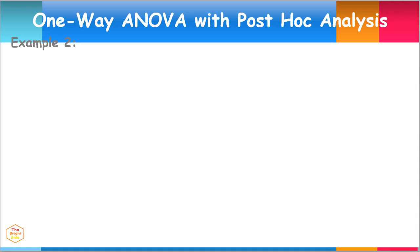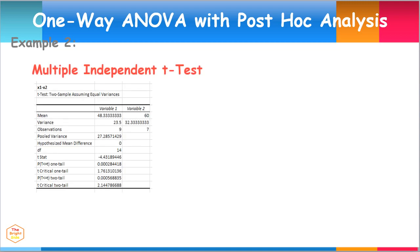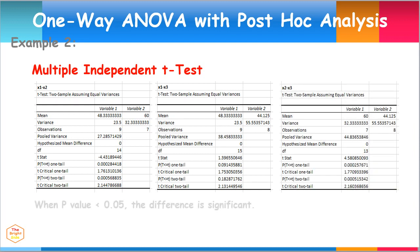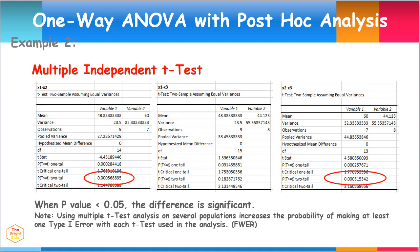Here is the result of the multiple independent t-tests using the Analysis ToolPak. Again, the same decision rule applies: when the P-value is less than 0.05, the difference between the means is significant. Notice that the difference is significant in the X1-X2 pair and the X2-X3 pair, since both of their P-values are less than 0.05. Note that using multiple t-test analysis on several populations increases the probability of making at least one Type I error with each t-test used in the analysis.